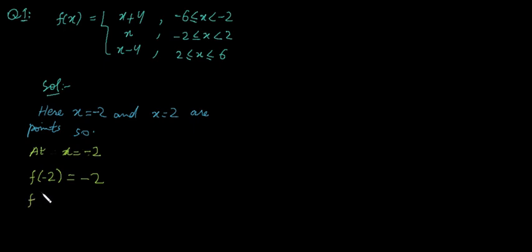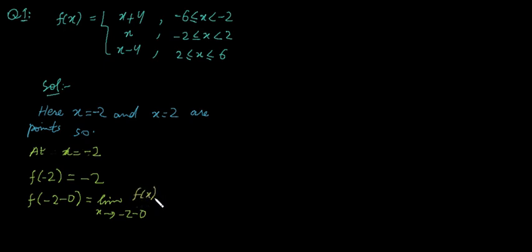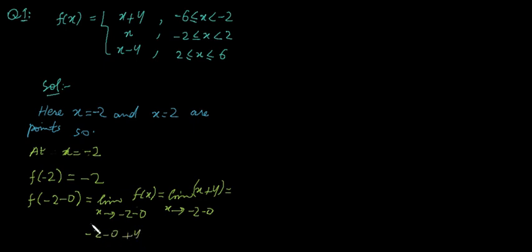Since the function is piecewise, we find the left and right-hand limits. The left-hand limit is denoted f(minus 2 minus 0). For the function to the left of minus 2, the formula is x plus 4. When we apply the limit as x tends to minus 2 from the left, we get minus 2 plus 4, which equals 2. So the left-hand limit is 2.